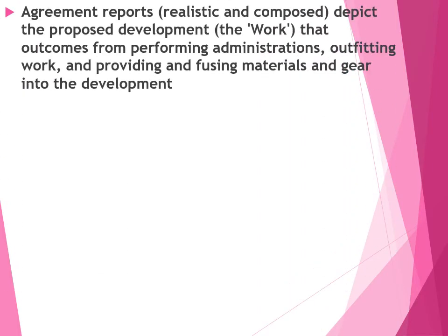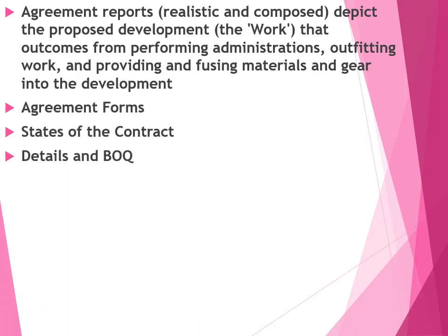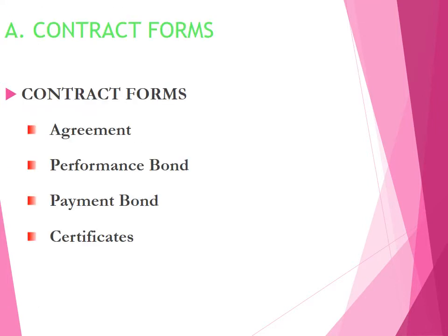Agreement documents result in performing administration, outfitting work, and providing and incorporating materials and equipment into the development. Agreement forms include: state of the contract, details on BOQ, drawings, addendum, and change orders if any. Contract forms consist of agreement, performance bond, payment bond, and certificate.